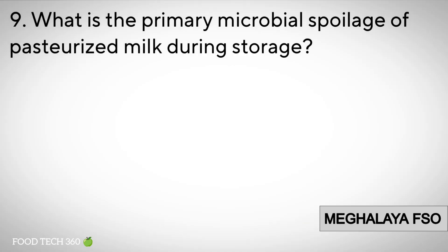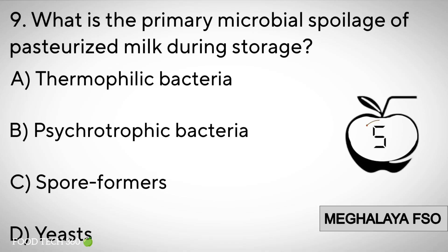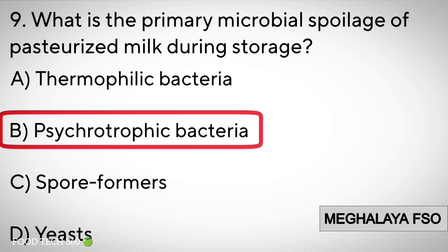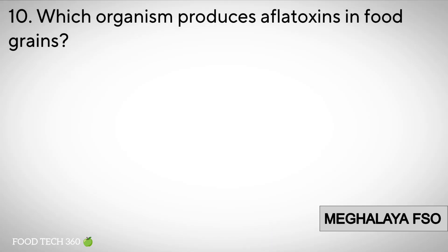Question number 9: What is the primary microbial spoilage of pasteurized milk during storage? Options: A. Thermophilic bacteria. B. Psychrotrophic bacteria. C. Spore formers. D. Yeast. Correct answer: B. Psychrotrophic bacteria.